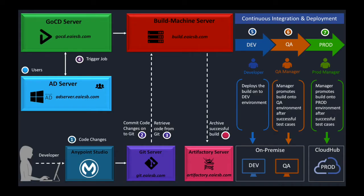This is the high-level architecture of implementing continuous integration; it comprises various tools. Anypoint Studio is a development editor to develop Mule project code. GitHub stores the Mule project code. JFrog Artifactory archives the golden copy of each promoting code. Active Directory maintains all the users and groups information who has access to promote the code.